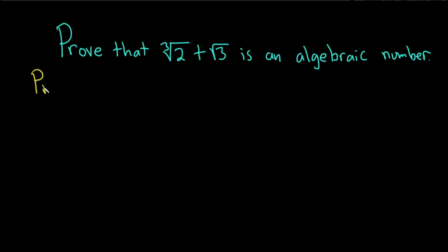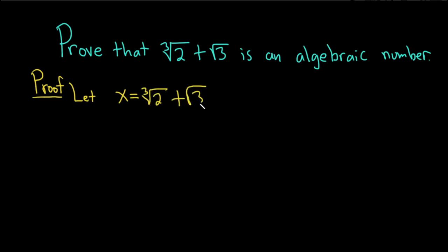Proof. To do that, we will give a constructive proof. We'll start by letting x be equal to the cube root of 2 plus the square root of 3. Now we're going to construct a polynomial equation with integer coefficients just from this. To do that, we have to get rid of all of these roots.